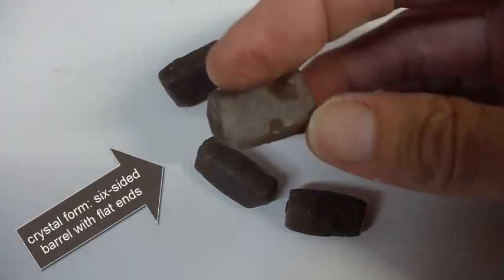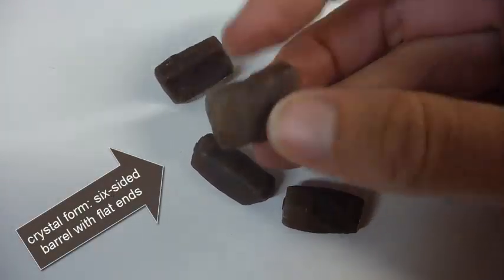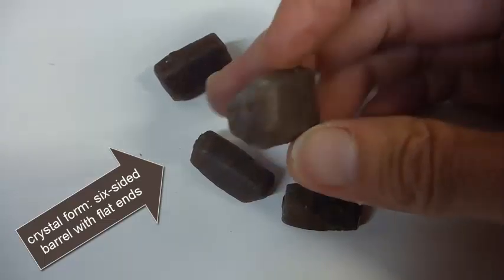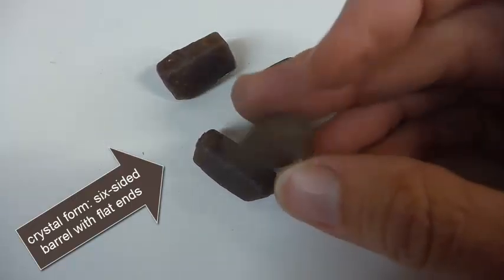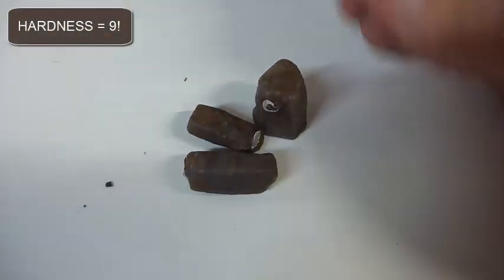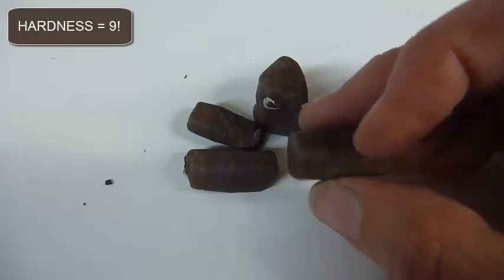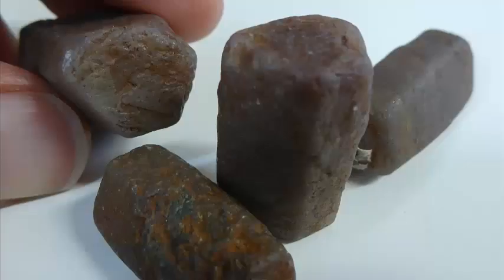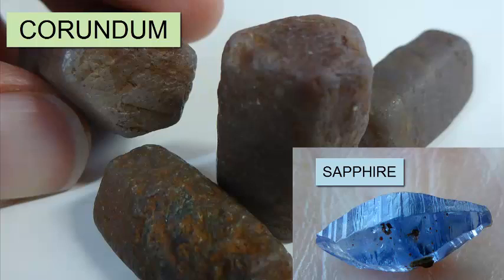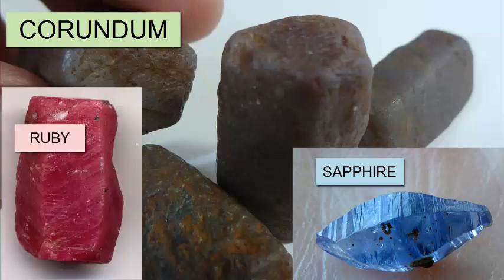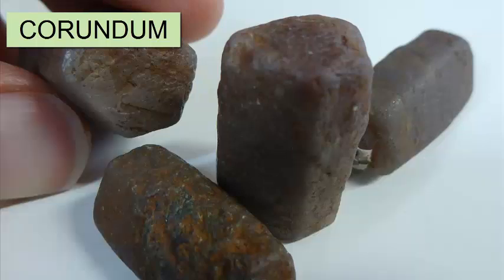Now let's look at the brown mineral. Notice its shape is a six-sided barrel, thicker in the middle than at the top and bottom, which are both flat ends. This crystal form is one of its most distinctive properties. The other is its hardness, which on a scale from 1 to 10 is a 9. This mineral is called corundum, and it can appear in a variety of colors. The transparent blue variety is called sapphire. The red variety, ruby. The samples we have in the class are all opaque and brown.